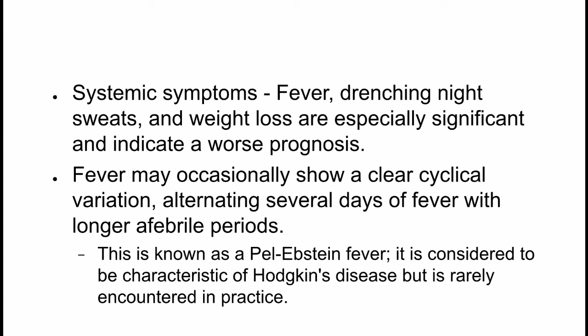Systemic symptoms: Fever, drenching night sweats and weight loss are especially significant and indicate a worse prognosis. Fever may occasionally show a clear cyclical variation, alternating several days of fever with longer afebrile periods. This is known as Pel-Epstein fever. It is considered to be characteristic of Hodgkin's disease, but it is rarely encountered in practice.